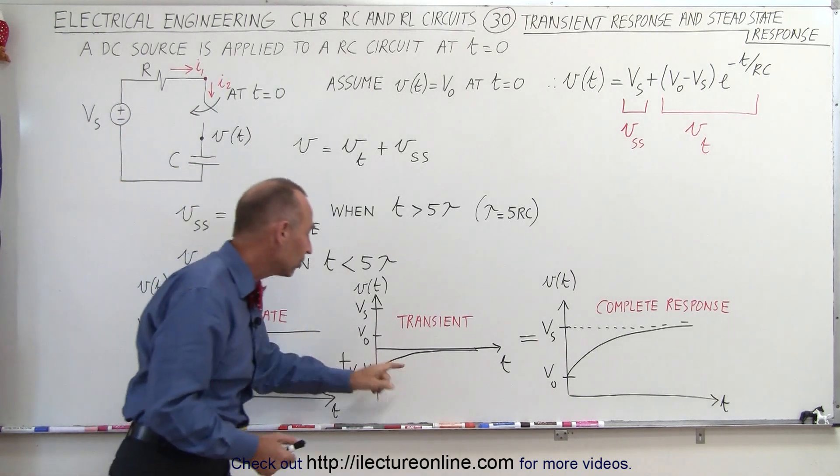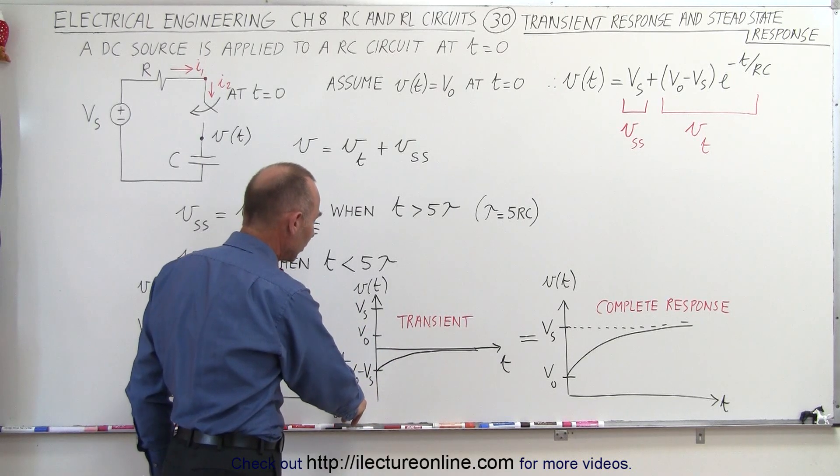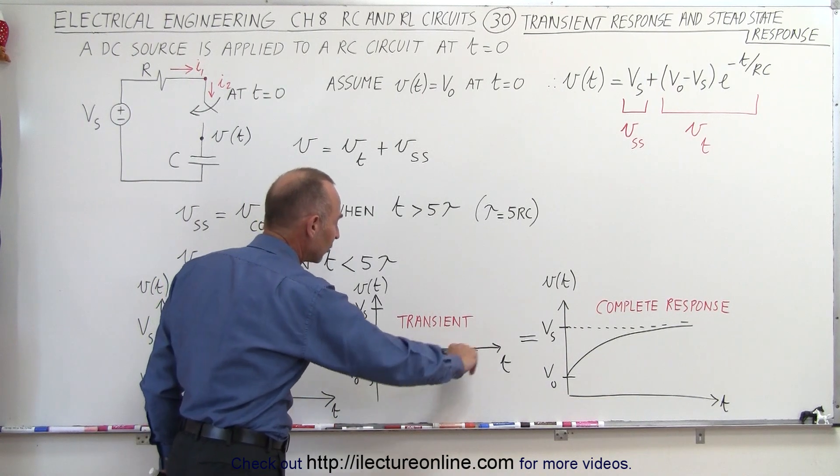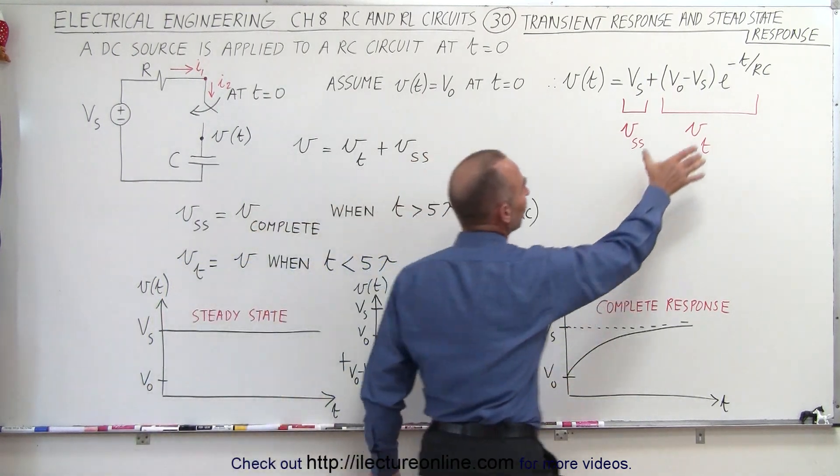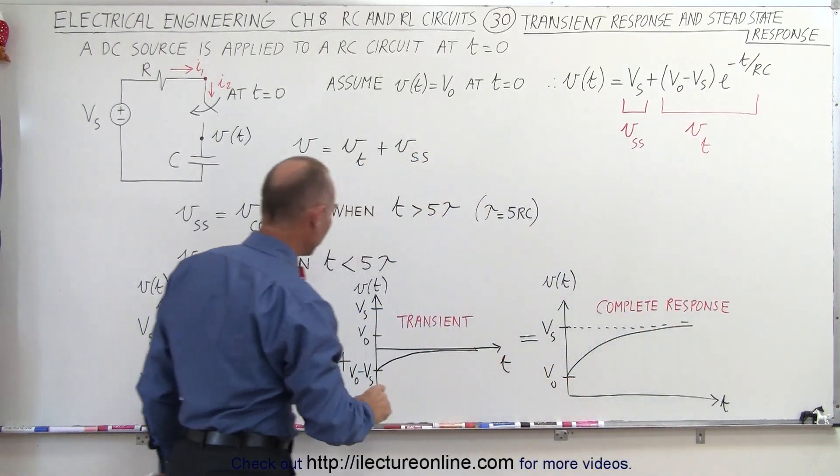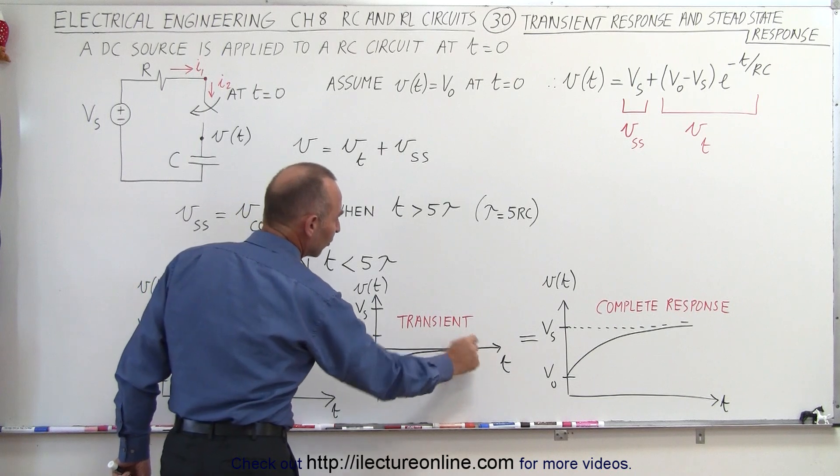But during the transient state, notice that this is the response of the circuit, where we go from the point V minus V of the source, so that's negative voltage, until we get down to zero voltage. So when we look at this portion of the equation right there, that represents a voltage that goes from V minus V sub S all the way to zero volts.